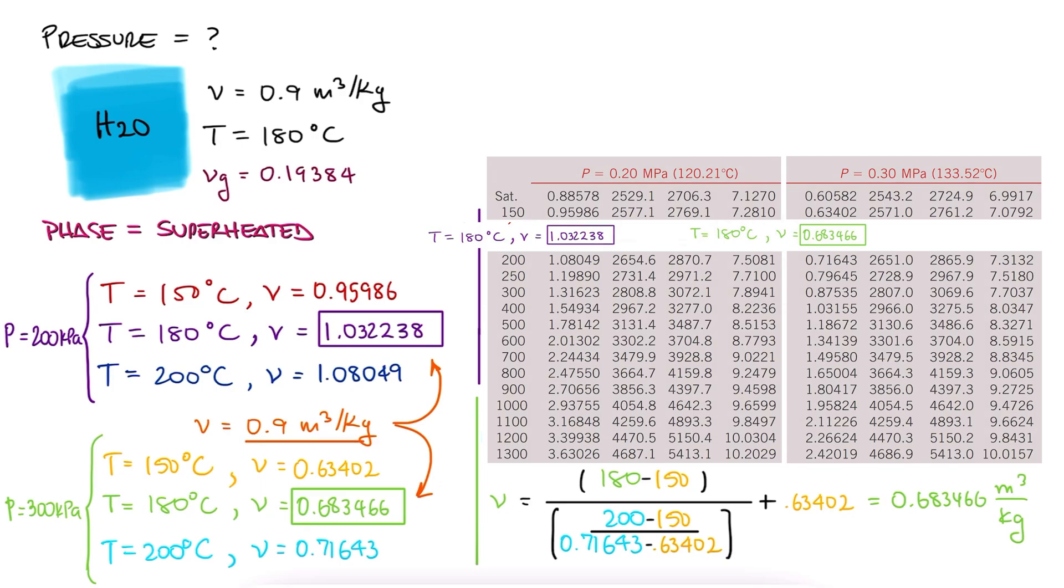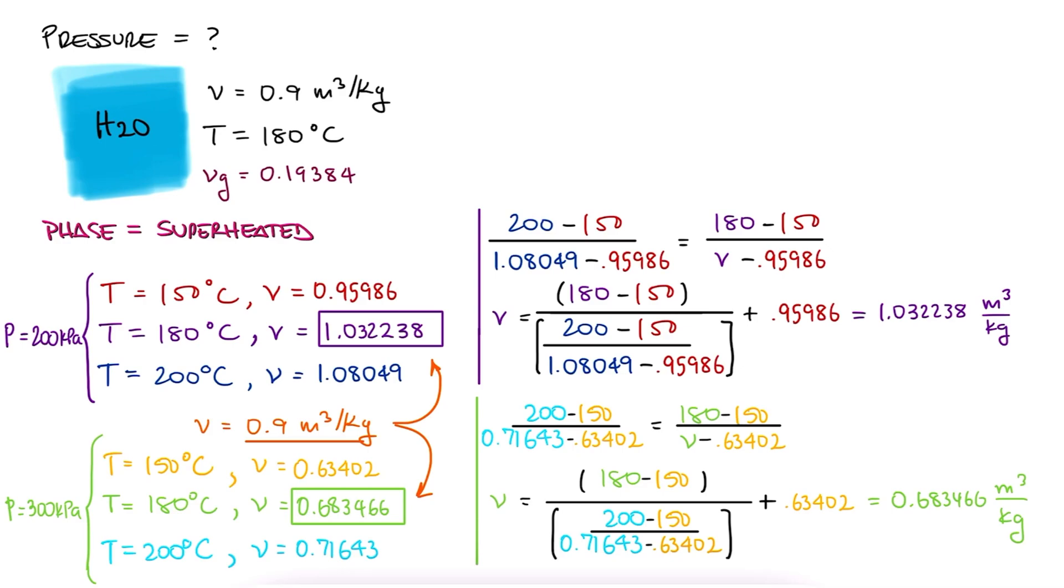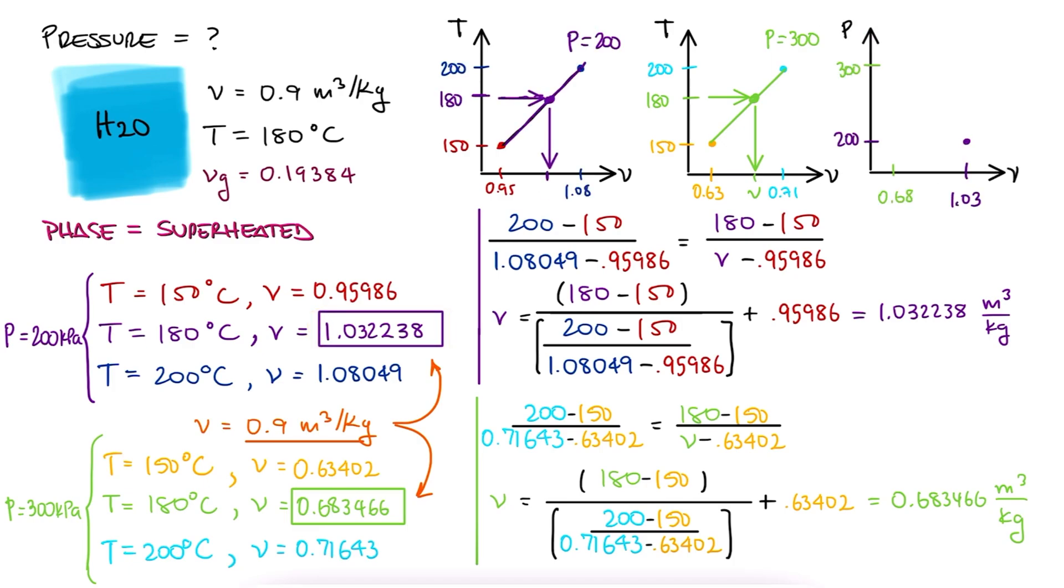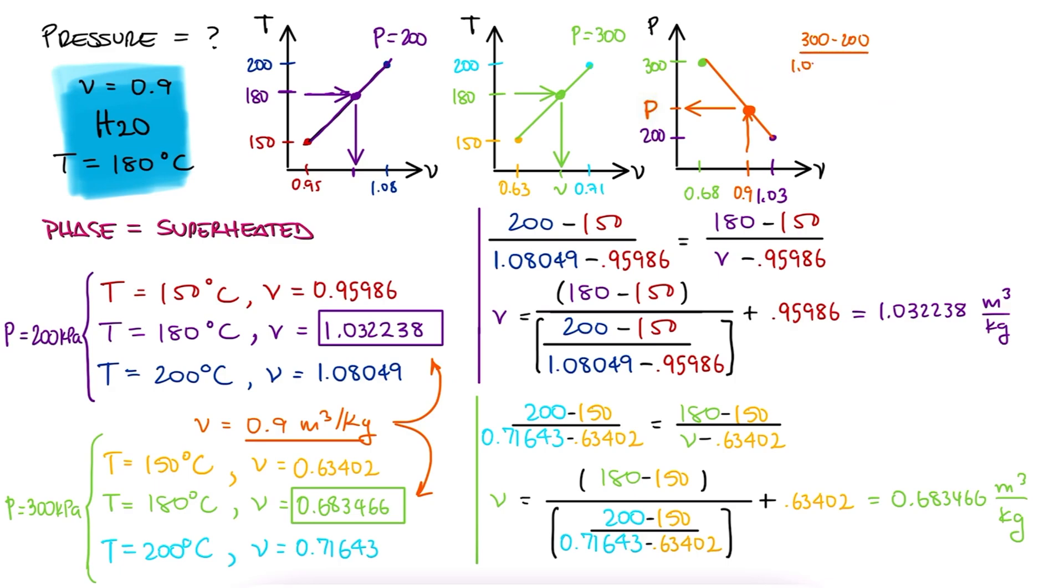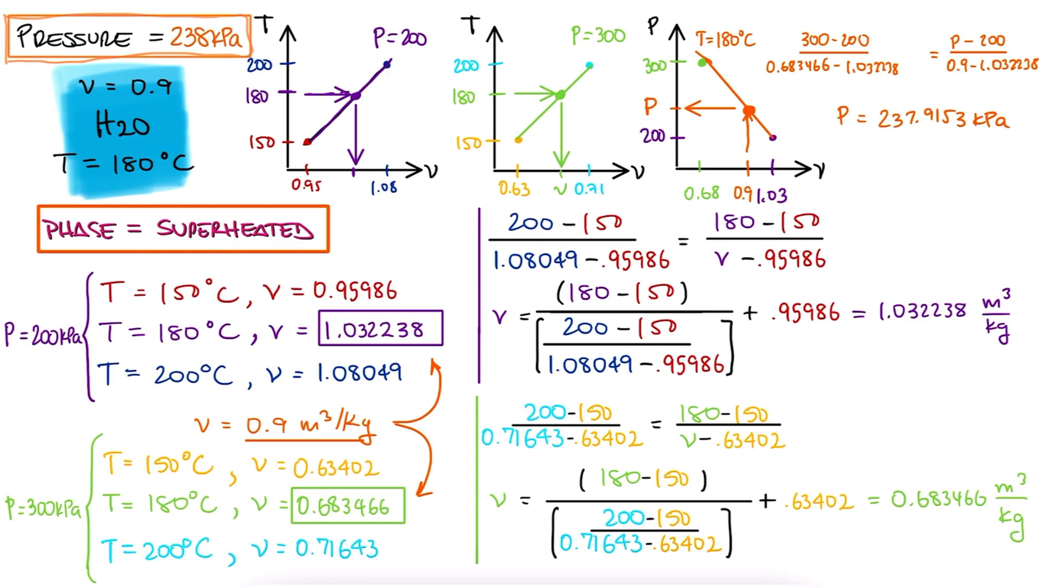And now we use this information just like we did for our previous example. We have 0.68 for 300 kilopascals, 1.03 for 200 kilopascals, and we interpolate linearly to find the pressure for a given specific volume of 0.9. This process yields 238 kilopascals. Done!